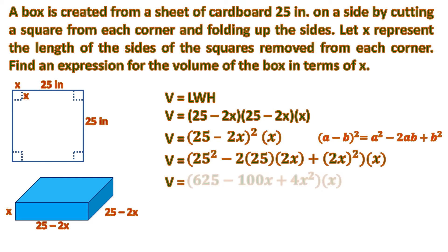Let us simplify. 25 squared is 625 minus 2 times 25 times 2 is 100 plus square of 2 is 4 and square of x is x squared, all will be multiplied by x. Then distribute the x. It will be 625x minus 100x squared plus 4x cubed.